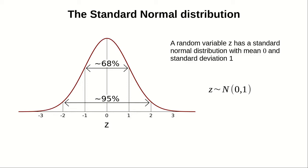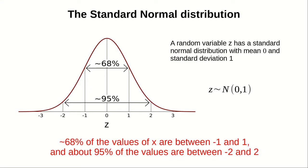There is something called the standard normal distribution, which is where the mean is zero and the standard deviation is one. In that case, the distribution gets much simpler. We can say that 68% of the values are between minus one and one, and 95% between minus two and two.